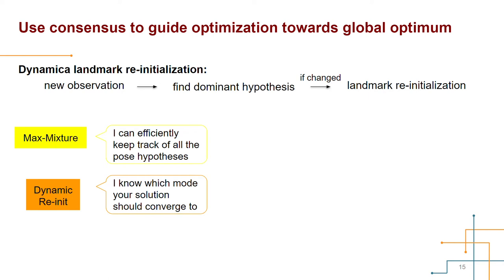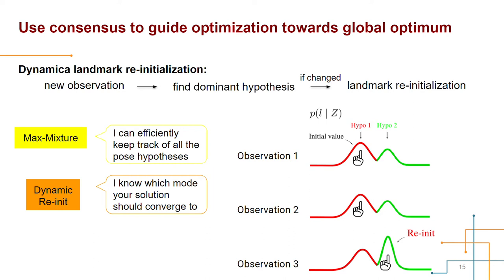The process has two major steps. Each time we receive a new measurement for a landmark, we first find the dominant pose hypothesis based on consensus. And if the dominant mode changes, we reassign the initial value within the new dominant mode. I am going to talk about the details in the two steps with the next two slides.